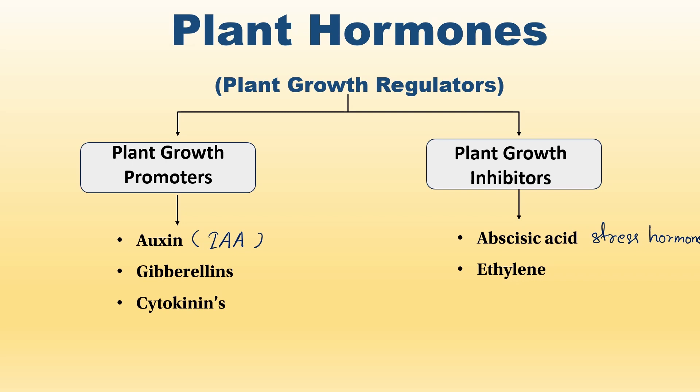We have five primary growth regulators. Primary growth regulators are: auxin, gibberellin, cytokinin, and abscisic acid, at the link.